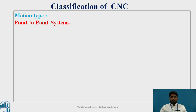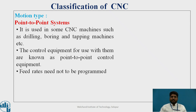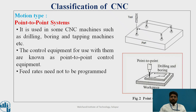Let's start with the classification by motion type. The first is the point-to-point system. The point-to-point system is used in CNC machines such as drilling, boring, and tapping machines. Control equipment used with them are known as point-to-point control equipment. In a point-to-point system, feed rates need not to be programmed. For example, in the figure shown, a workpiece is loaded on the CNC machine and if only drilling or boring is performed on the workpiece, we can use the point-to-point system.